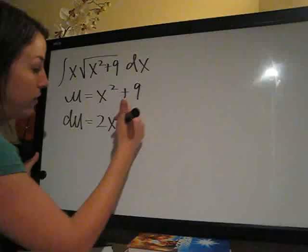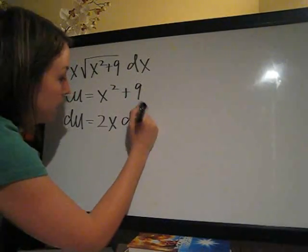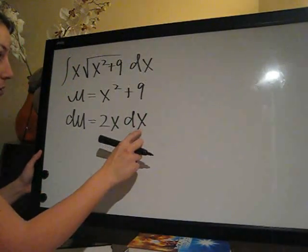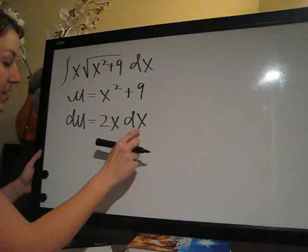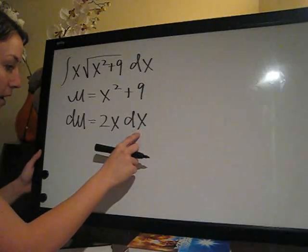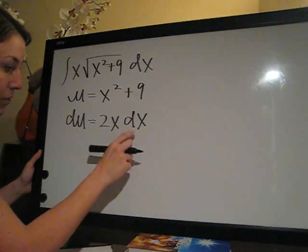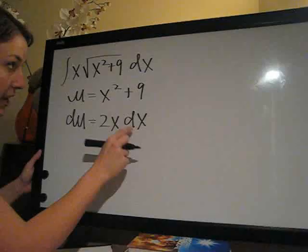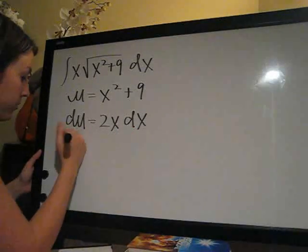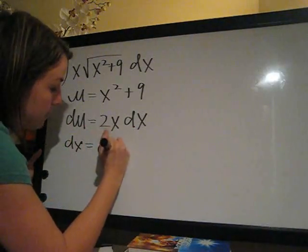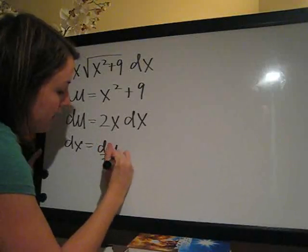Now that we've taken the derivative, we add dx, as always, so that we can solve for dx. So we tack dx onto the end, and then we divide both sides by 2x so that we can get dx by itself. So dx is going to be du over 2x.